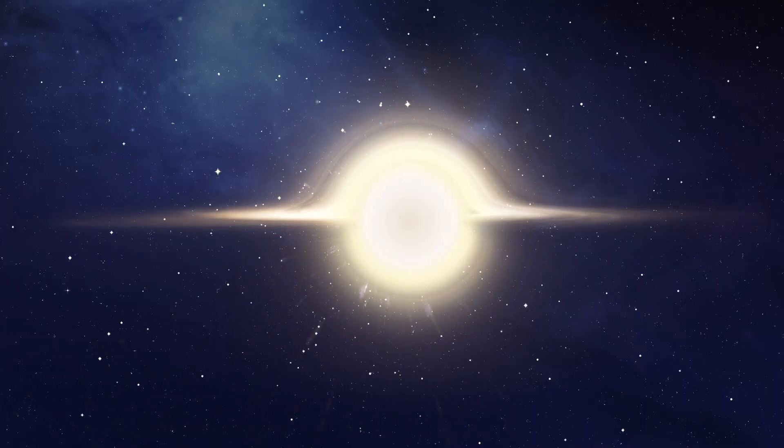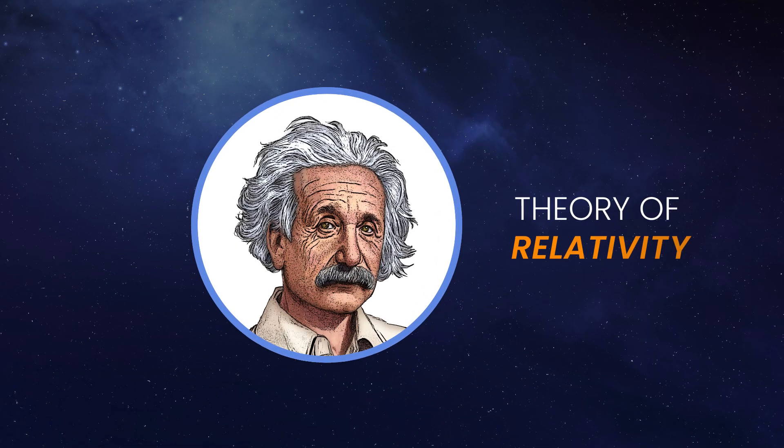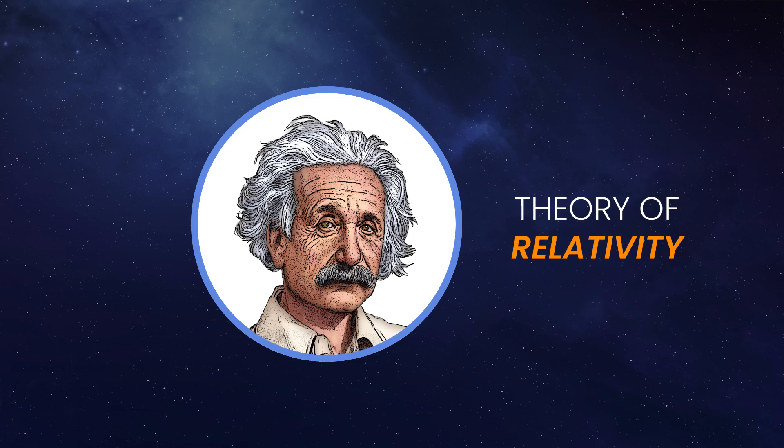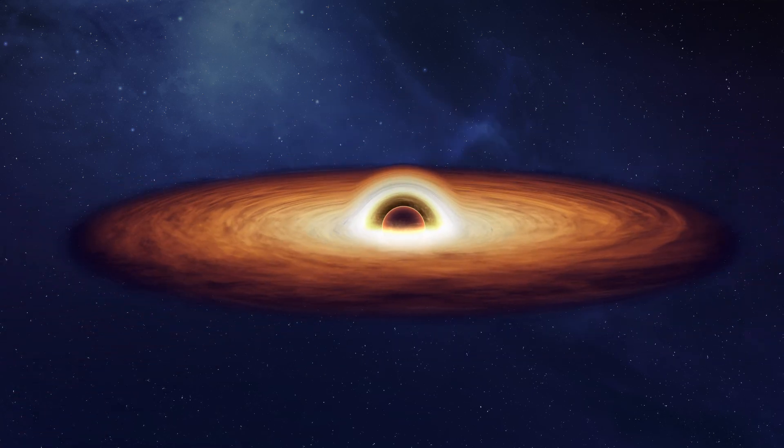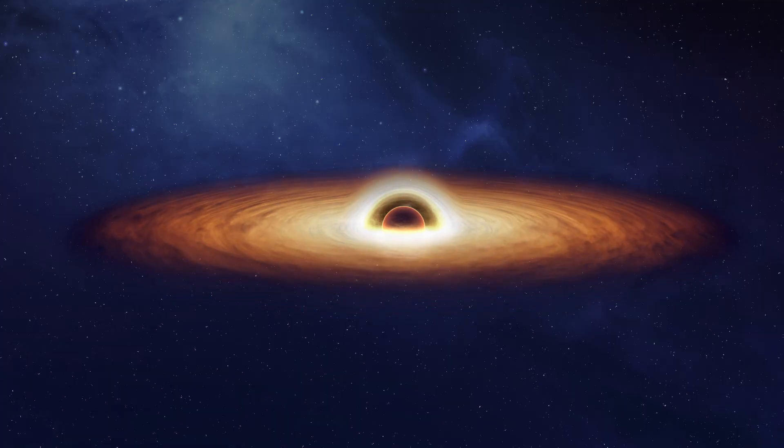We've never seen one, not even once. White holes only appear in the equations of Einstein's theory of relativity. In theory, they could exist as the endpoints of wormholes, or as the final stages of dying black holes. But nobody knows for sure.